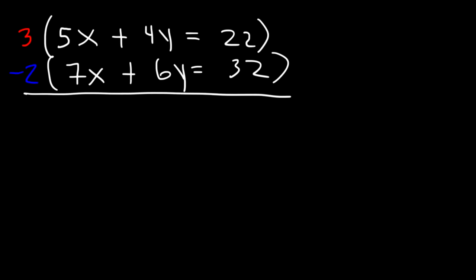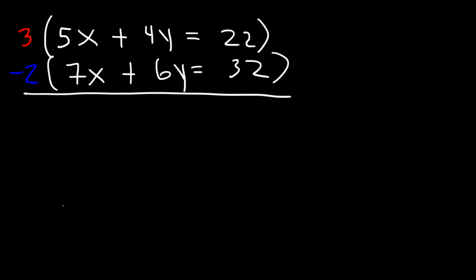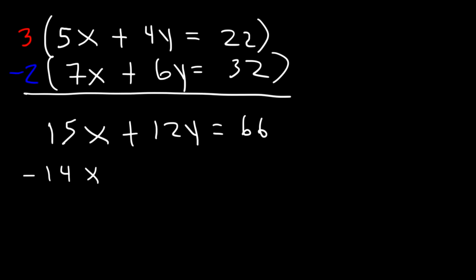So let's go ahead and do that. Everything in the first equation we need to multiply by 3. So 3 times 5x is 15x, 3 times 4y is 12y, and 3 times 22 is 66. Now let's multiply everything in the second equation by negative 2. Negative 2 times 7x is negative 14x. Negative 2 times 6y is negative 12y. And negative 2 times 32 is negative 64.